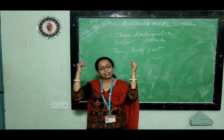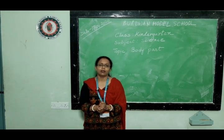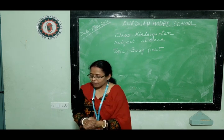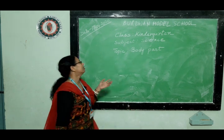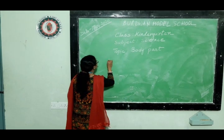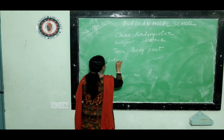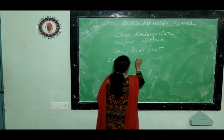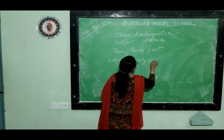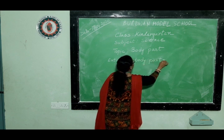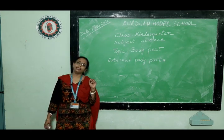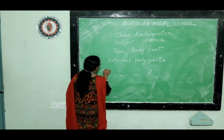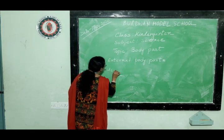So these are the external body parts — they are also called external body parts. The first part we learnt about is our external body parts, which can be seen. These parts are called external because they can be seen.